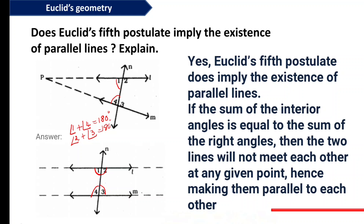When the sum of interior angles on both sides equals 180 degrees, the lines will not meet on the left side and will not meet on the right side either — they are parallel. This is all about Exercise 8.2 of Euclid's Geometry. If you like this video, please share it with your friends. Thank you.